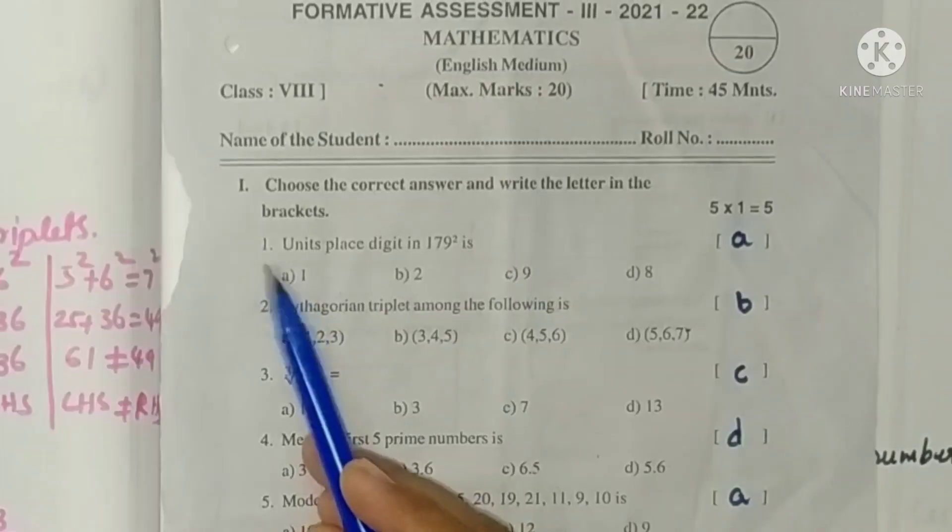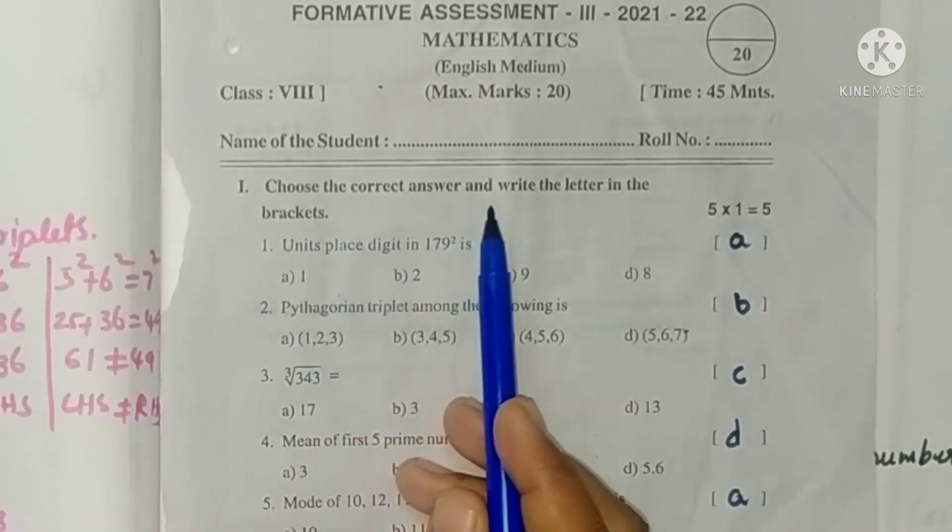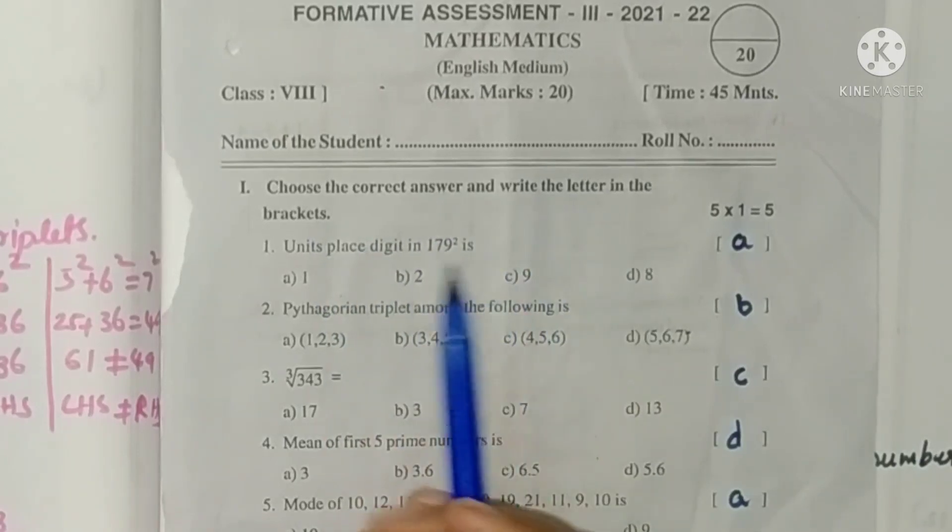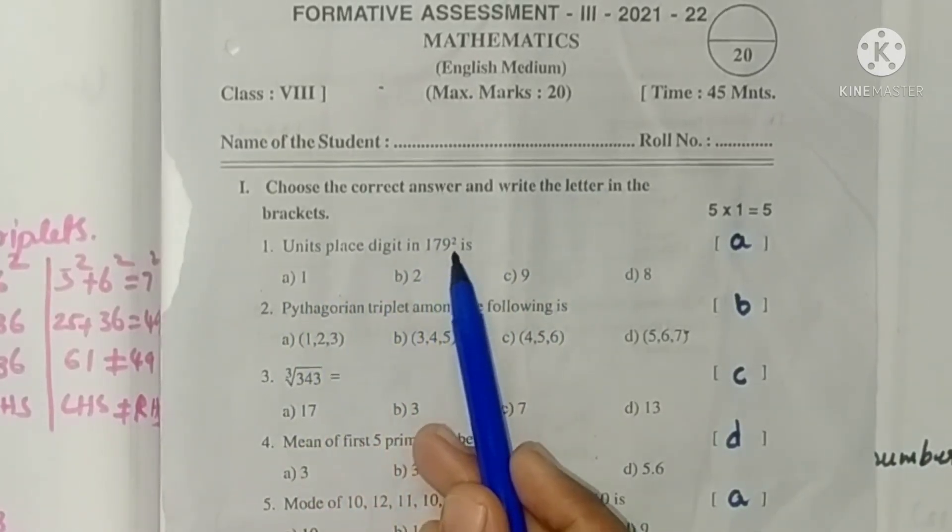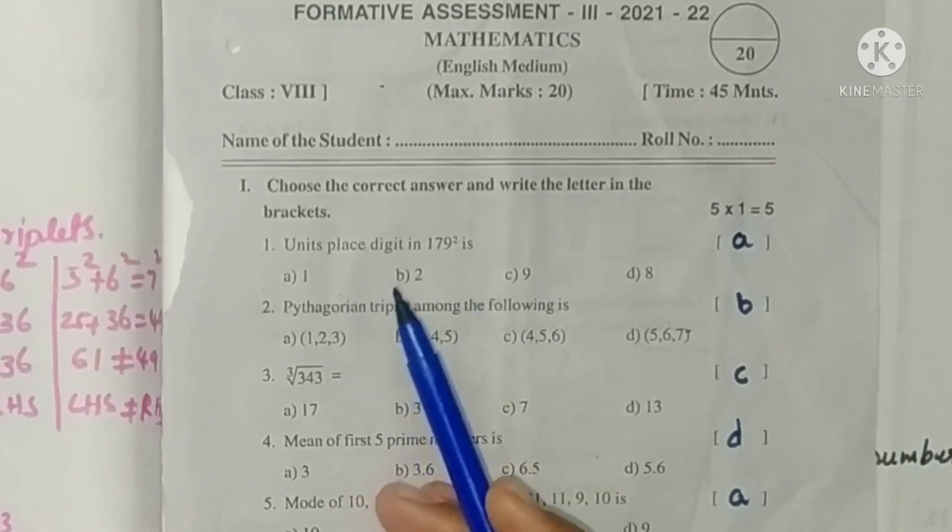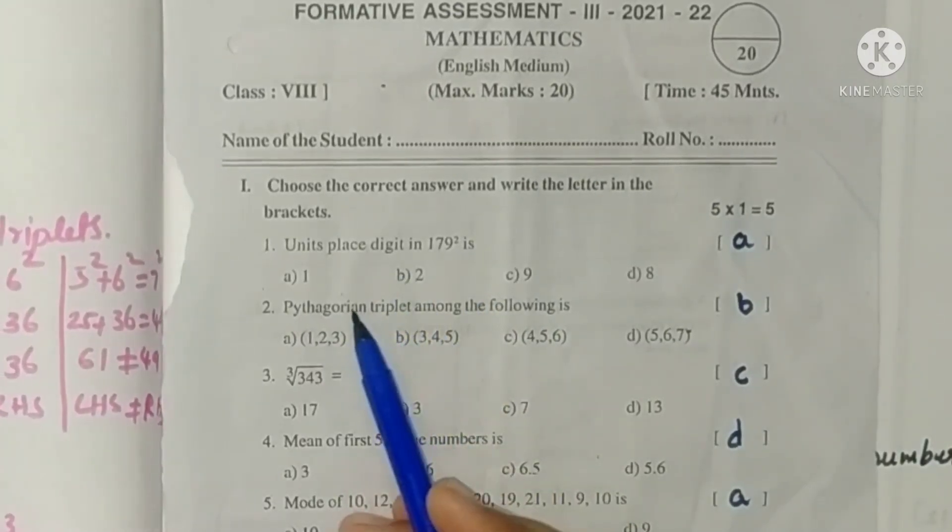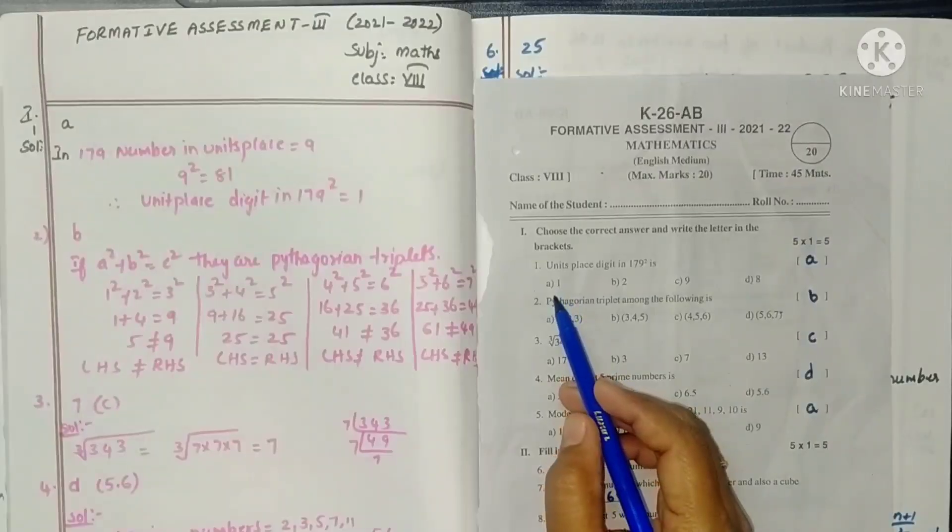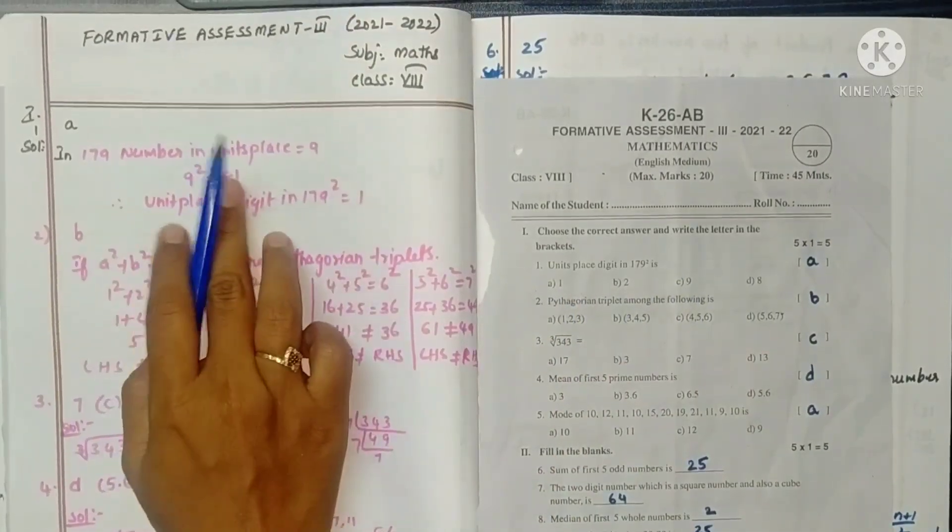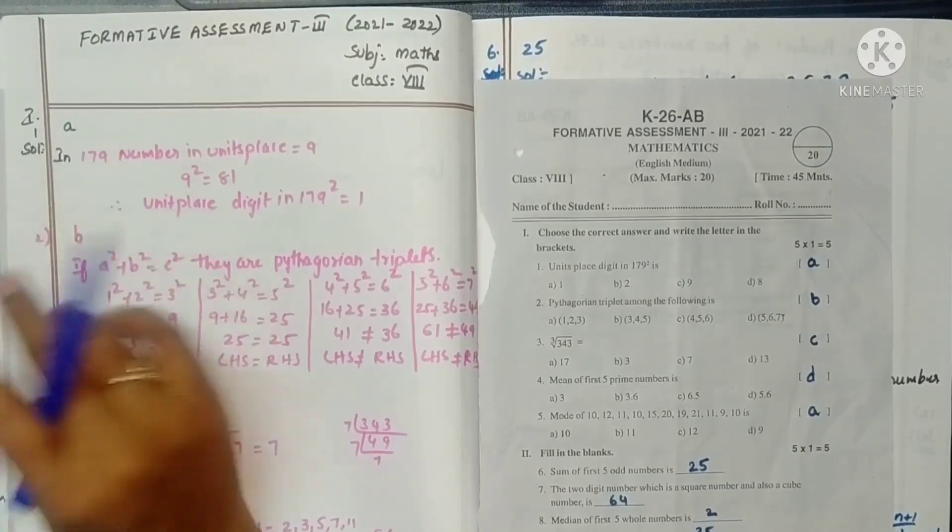First question: choose the correct answer and write the letter in the brackets. First one, units place digit in 179 square. 9 square is 81, so 179 square is also 1. So it is option A.